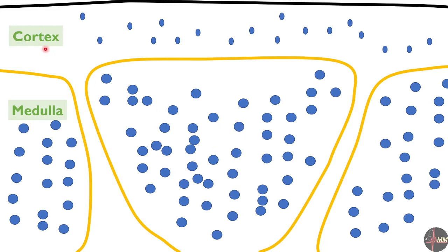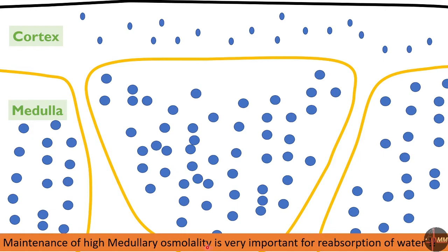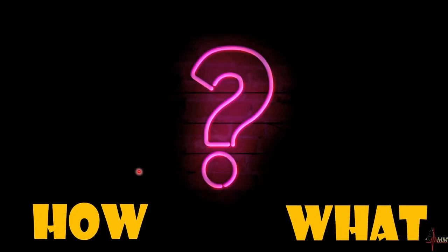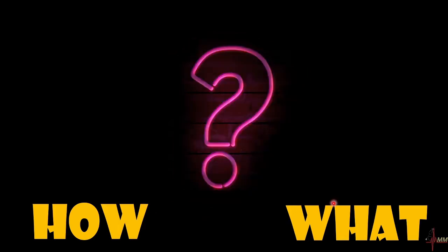Here is the cortex of a kidney, which is the outer portion, and this is the medulla, which is the inner portion. The osmolarity of the medulla is very high when compared to the cortex. This is very important because you will know by the end of this session that this high medullary osmolality is very important for the reabsorption of water.